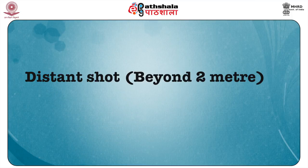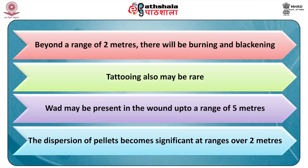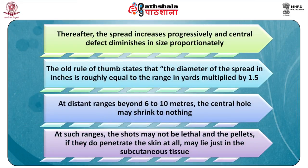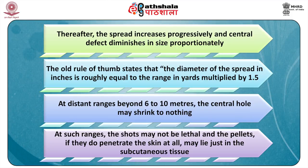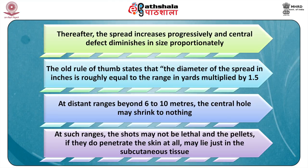In a distant shotgun shot beyond 2 meters, burning, blackening, and tattooing will all be rare. The wad may be present in the wound up to a range of 5 meters. The dispersion of pellets becomes significant at ranges over 2 meters, and the spread increases progressively while the central defect diminishes. The old rule of thumb states that the diameter of the spread in inches is roughly equal to the range of firing in yards. At distance ranges beyond 6 to 10 meters, the central hole may shrink to nothing. At such ranges, shots may not be fatal, and pellets may lie just underneath the subcutaneous tissue.